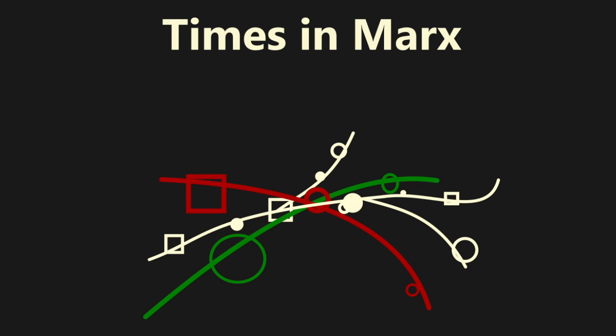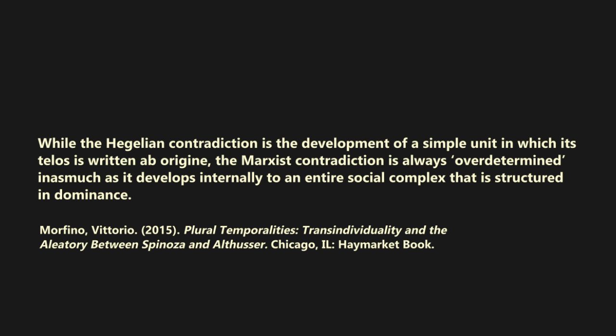The whole structure consists of a complex of levels which have their own times and are described by Althusser as being semi-autonomous. Though they are defined in the last instance by the economic structure, this dominance is tempered by a relative autonomy within which each level shifts and evolves. Vittorio Morfino echoes this sentiment when he writes, while the Hegelian contradiction is the development of a simple unit in which its telos is written ab origine, the Marxist contradiction is always overdetermined, inasmuch as it develops internally to an entire social complex that is structured in dominance.